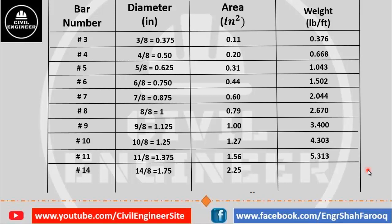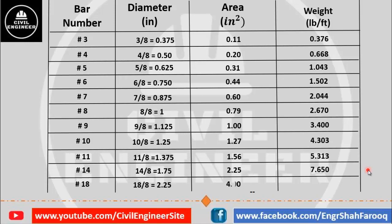The next bar available in markets is number fourteen: diameter is 14/8 inches, cross-sectional area is 2.25 square inches, and weight per foot is 7.65 pounds. The last bar is number eighteen: diameter is 18/8 inches, cross-sectional area is 4 square inches, and weight is 13.6 pounds per foot. That was all for today — thank you very much for watching the video in full.